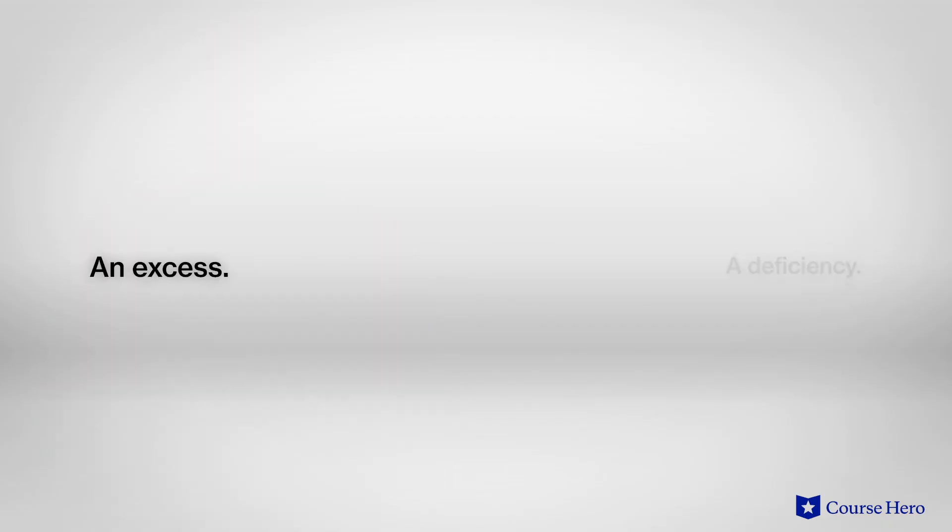In section eight, Aristotle reminds the reader that each character trait has two possible vices, an excess and a deficiency, with a virtuous balanced state in the middle. People on the extreme ends of the spectrum may want to appear more moderate than they really are, and push people who are more moderate to opposite extremes, so they can look better by comparison.